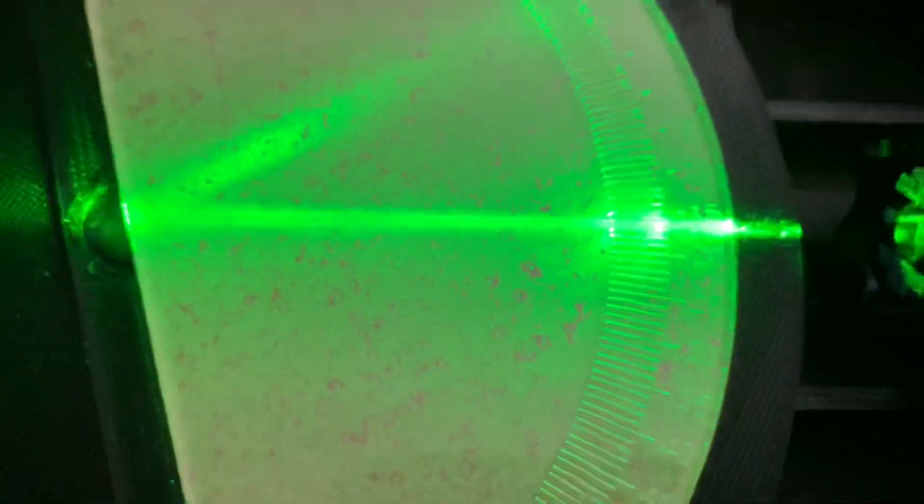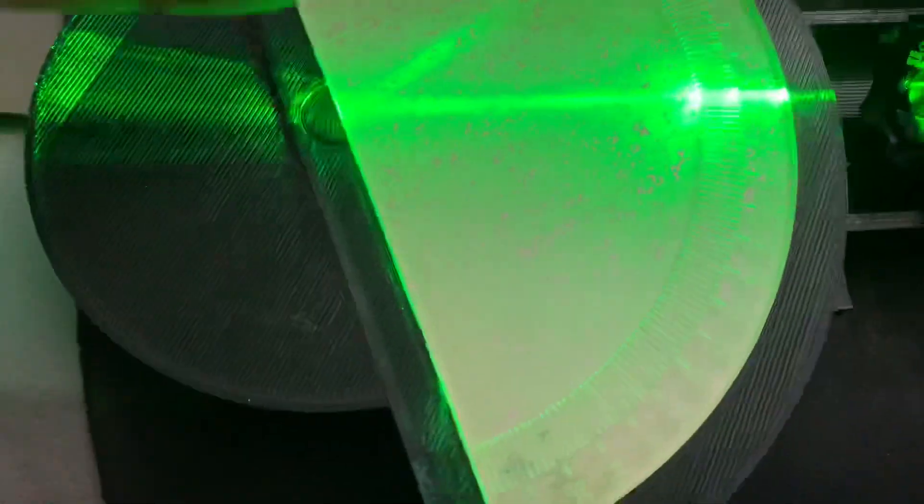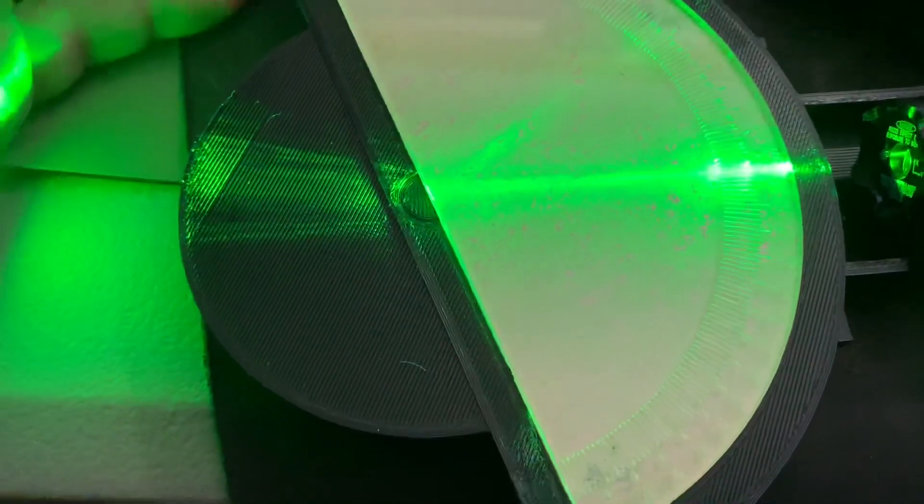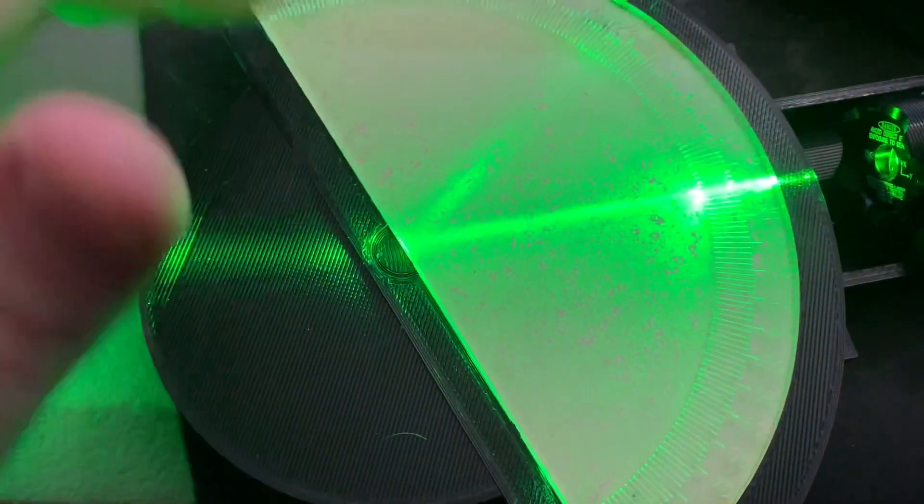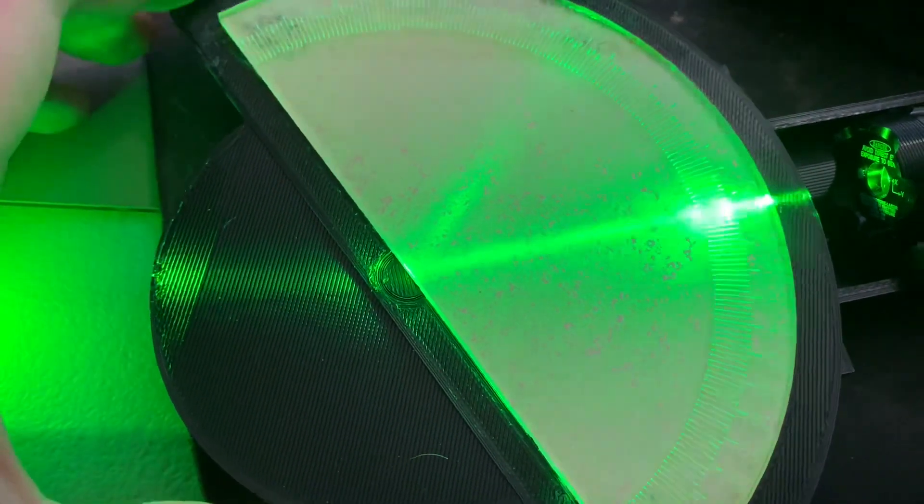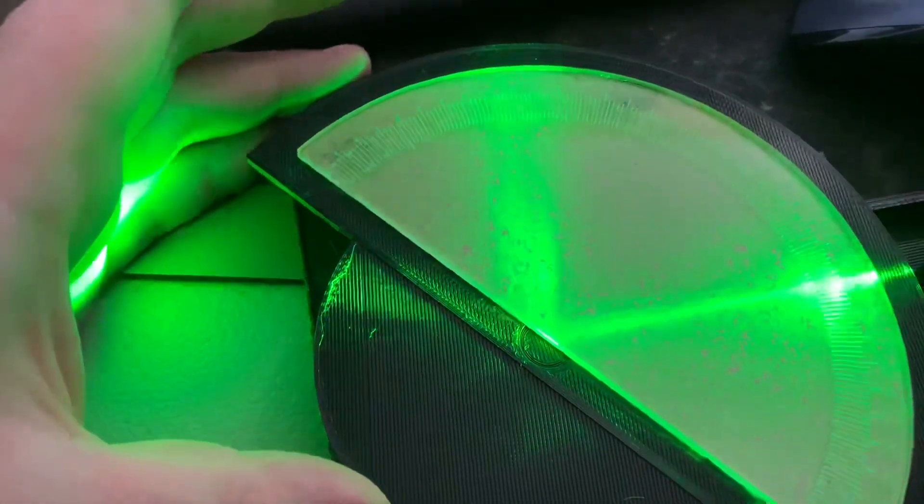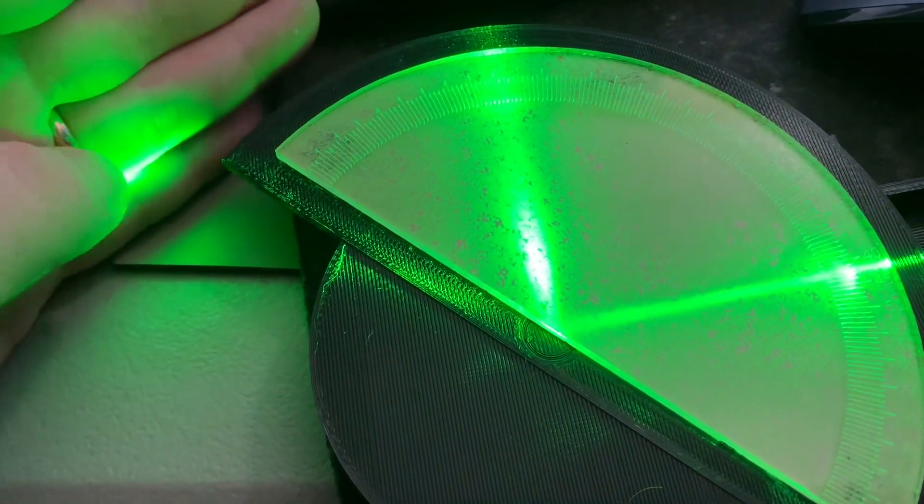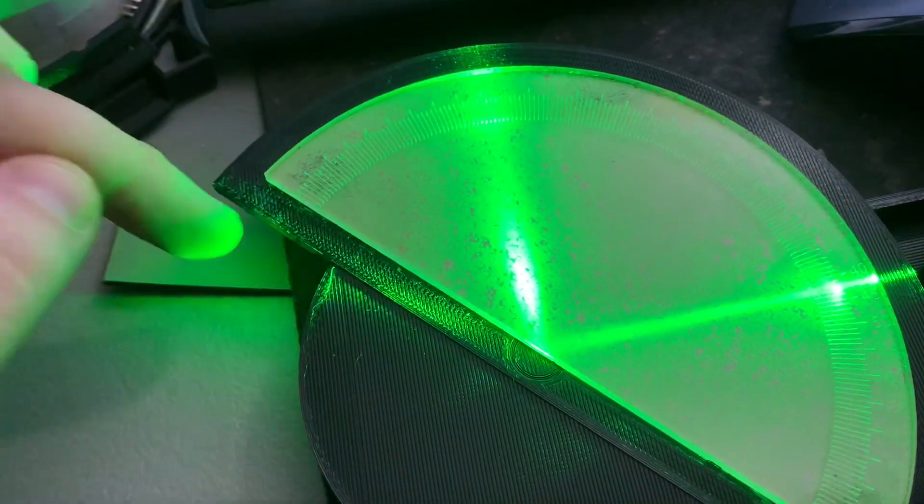Now as we increase the angle relative to the normal here, you will see that the light will get bent more and more towards this edge. And you can watch my hand as I rotate the half disc. The beam right now is right over here, so it's getting bent pretty much like that.